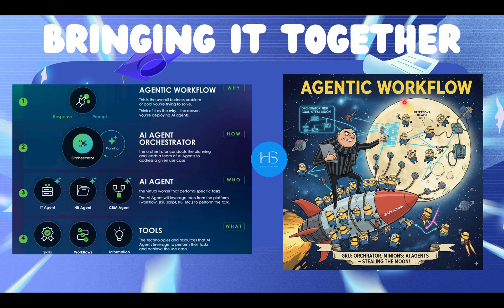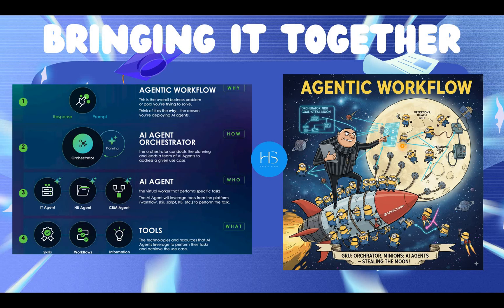Bringing it all together: on the right-hand side you can see how the agentic workflow maps to the analogy. The agentic workflow was the mission — to steal the moon. Then we have Gru, the orchestrator, who is responsible for orchestrating the whole heist and deciding which minion does what task at what point in time. Then we have AI agents, the small minions, responsible for small tasks like making the rocket, launching it, or grabbing the moon. Finally, tools are the gadgets the minions are using — for example, they use gadgets to pull the moon towards themselves.